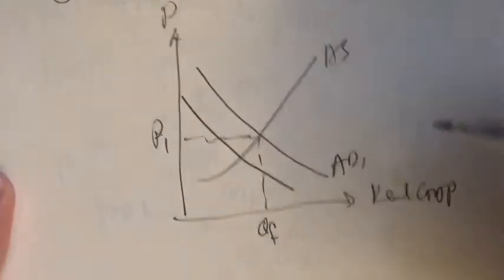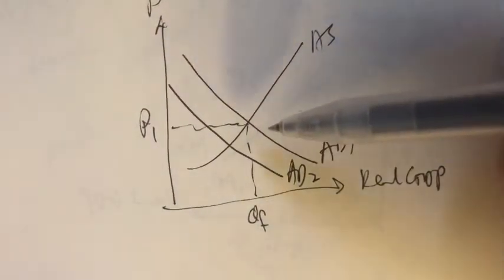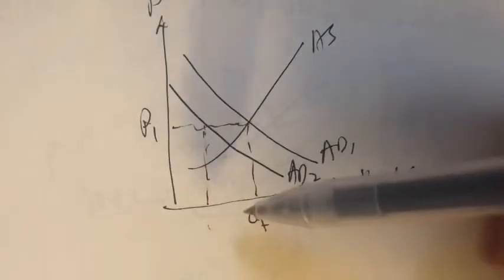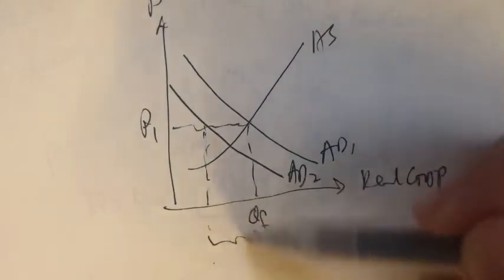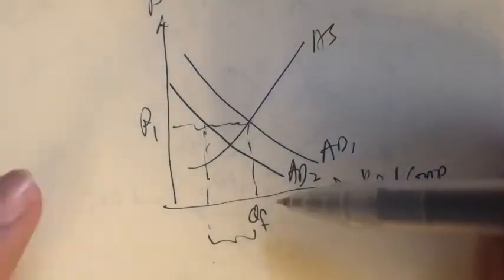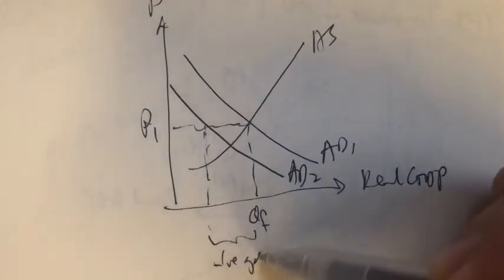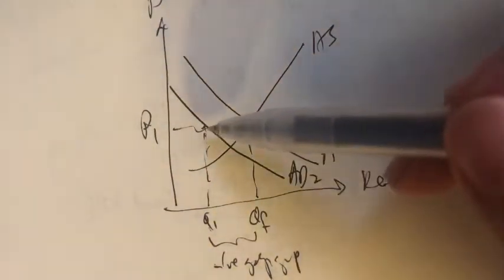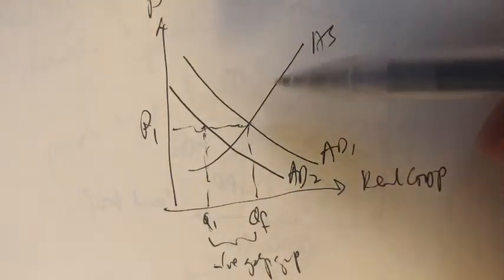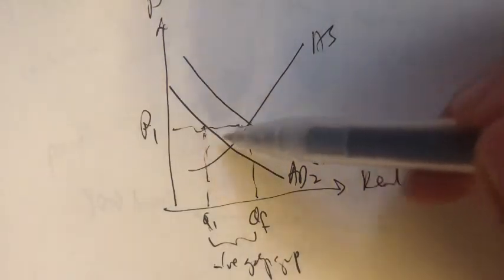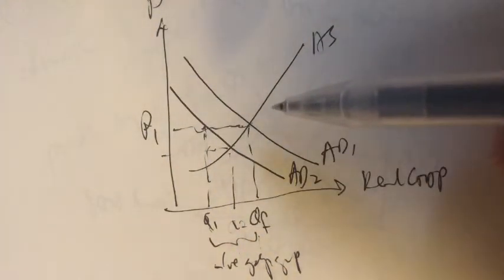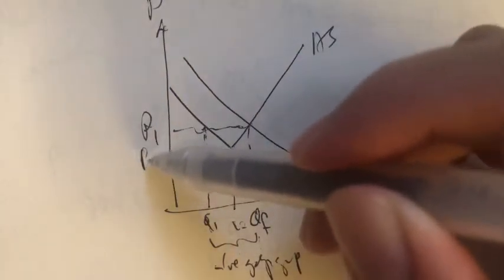Now, say if the price level maintains at P1, we will have a very large negative GDP gap. QF is the optimal output, so anything below that is below optimal — this is a negative GDP gap. We would have thought, just like in the previous case, that the price would fall, and so the GDP gap wouldn't be that bad. But here we need to make that correction: price will not fall, it will not fall to P2. In fact, the price will remain at P1. This is due to the ratchet effect.